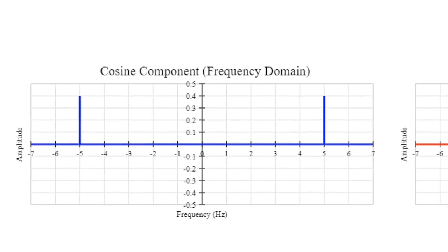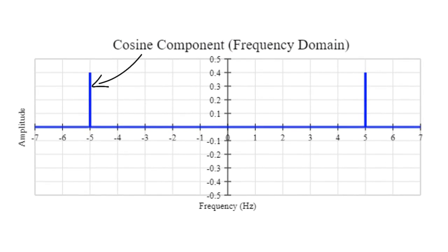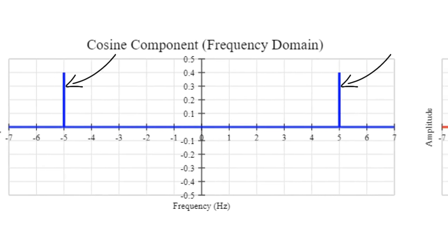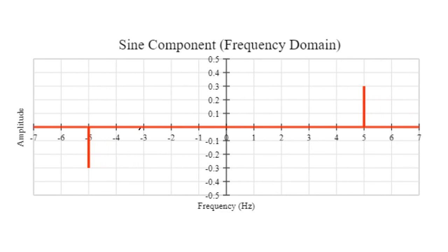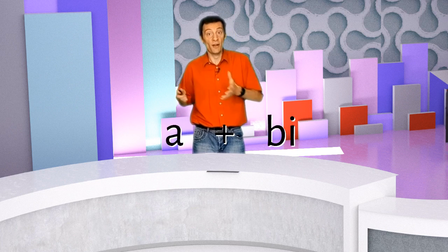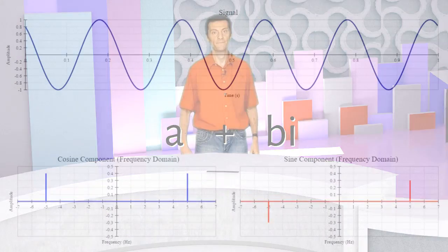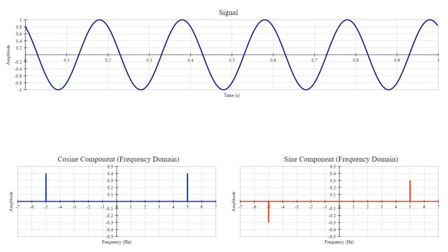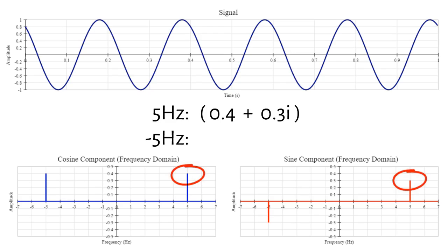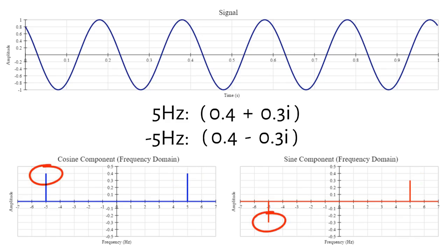Understanding negative frequency in this way explains why the amplitude of the cosine component at negative 5 Hz is positive, like the amplitude of the cosine component at positive 5 Hz, and why the amplitude of the sine component at negative 5 Hz is negative while the amplitude at positive 5 Hz is positive. In the frequency domain, the cosine and sine components at each frequency are represented by a complex number. The cosine component is represented by the real part, and the sine component by the imaginary part. There are two non-zero frequencies in this signal — 5 Hz and minus 5 Hz — so this signal can be represented by just two complex numbers: 0.4 + 0.3i for 5 Hz, and 0.4 − 0.3i for minus 5 Hz.